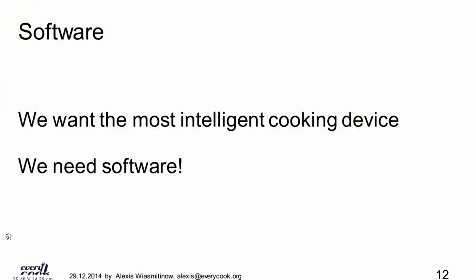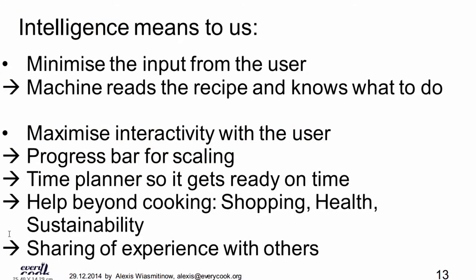To make it intelligent, we need software inside. Intelligence means, on one hand, minimizing input from the user as much as possible — if the software can anticipate something, we'd like it to do so. Of course there will always be a manual override. But if you do the same thing ten or a hundred times, it's useful if the software already knows what you want.